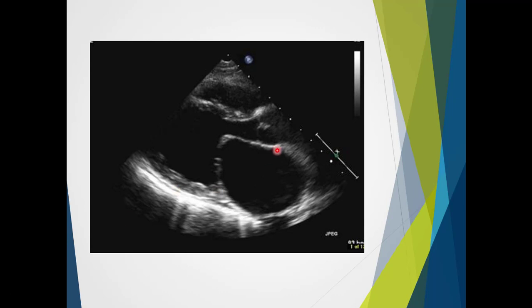Here in our parasternal long axis window, we've got our left ventricle and we can see the anterior leaflet and the posterior leaflets clearly.